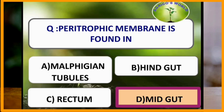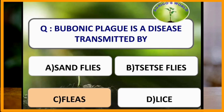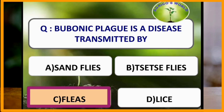Scale insects belong to the order Hemiptera. Bubonic plague is a disease transmitted by fleas.